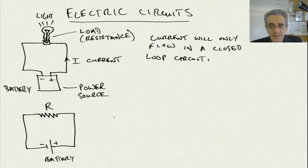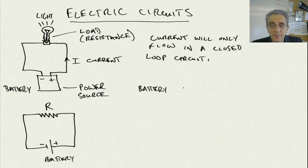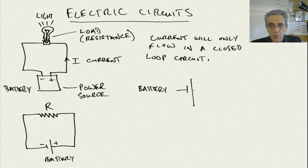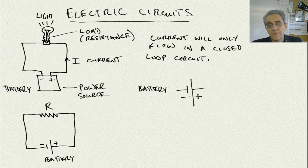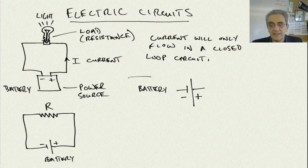An easy way to memorize which side of a battery is negative and positive: look at the two sides of the battery symbol and ask which side takes more ink or length to draw. It's the right-hand side. If you think about drawing a minus and a plus symbol, the minus takes less ink to draw and the plus takes more. So the plus side always goes to the longer side — that's the symbol for a battery.